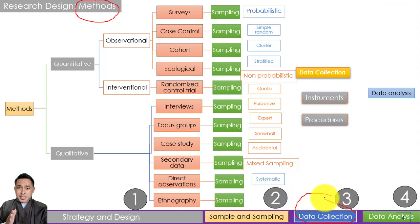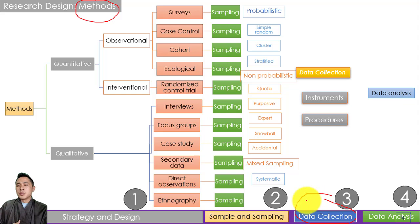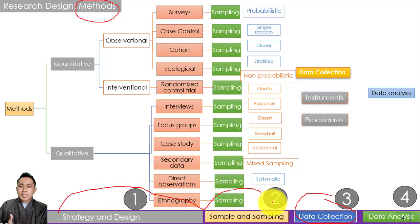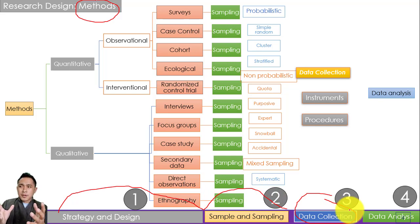Data collection is not simply going directly to the field or to a population and doing some kind of collection method. It's a long process, because of that we have a whole strategy and design, followed by sampling, and data collection always follows with data analysis. This is a very huge topic — this is what research design is all about.